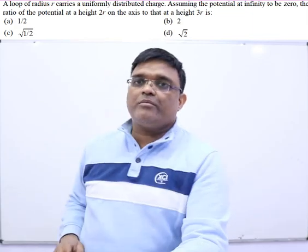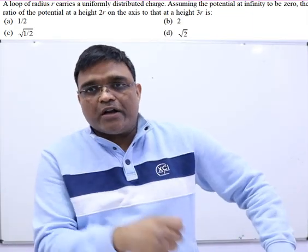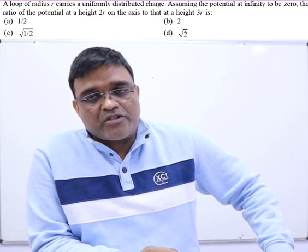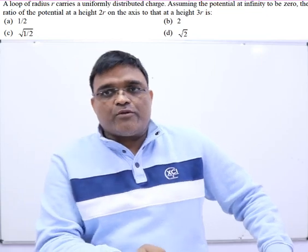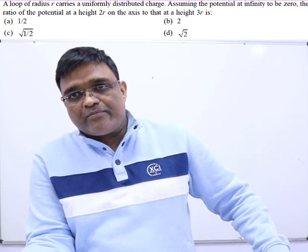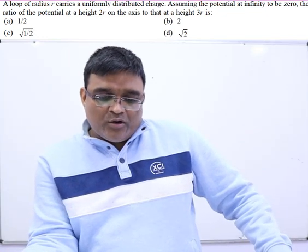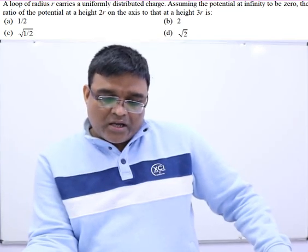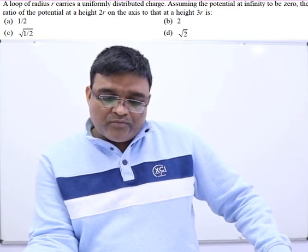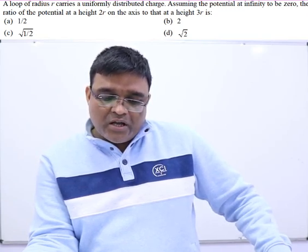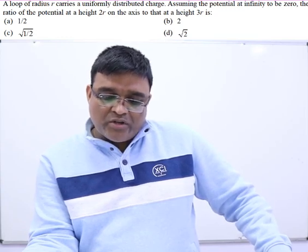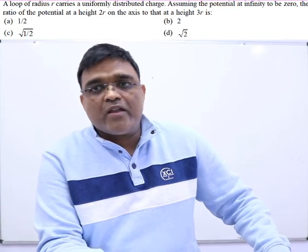Hello students, today we are going to do some questions on electric field and potential. These questions have been asked in different exams. The first question appeared in IIT Bangalore 2010. The question says: a loop of radius r carries a uniformly distributed charge. Assuming the potential at infinity to be zero, find the ratio of the potential at height 2r on the axis to that at height 3r.